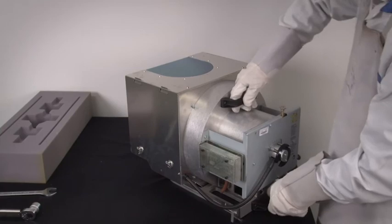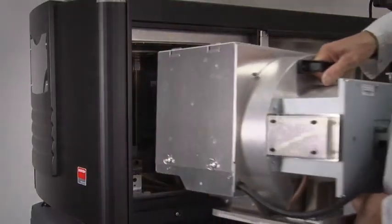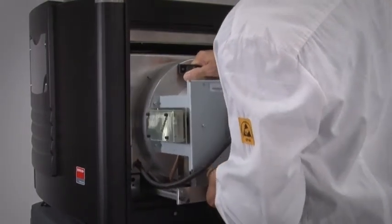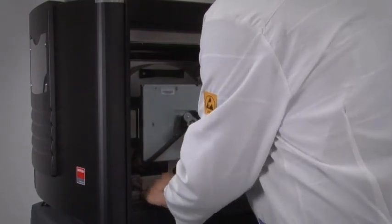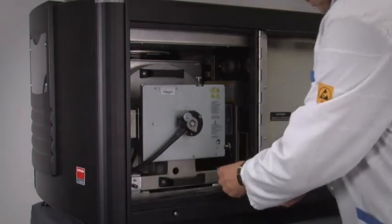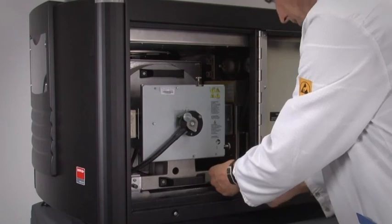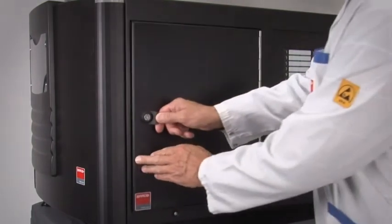Hold the lamp house by the rear handles and insert into the projector. Ensure the lamp house is properly seated. Tighten all two spring-loaded captive bolts that lock the lamp house to the projector. Close the lamp house compartment door.